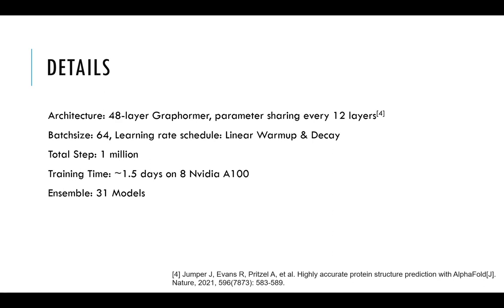The training details are listed here. We use 48-layer Graphormer, and the parameter is shared every 12 layers, which is inspired by AlphaFold2. The batch size is 64, and the learning rate schedule is linear warm-up and decay. The total training step is 1 million, and it takes about 1.5 days for training on 8 NVIDIA A100 GPU cards. And the final results are assembled by 31 models with different data partition and random seed.